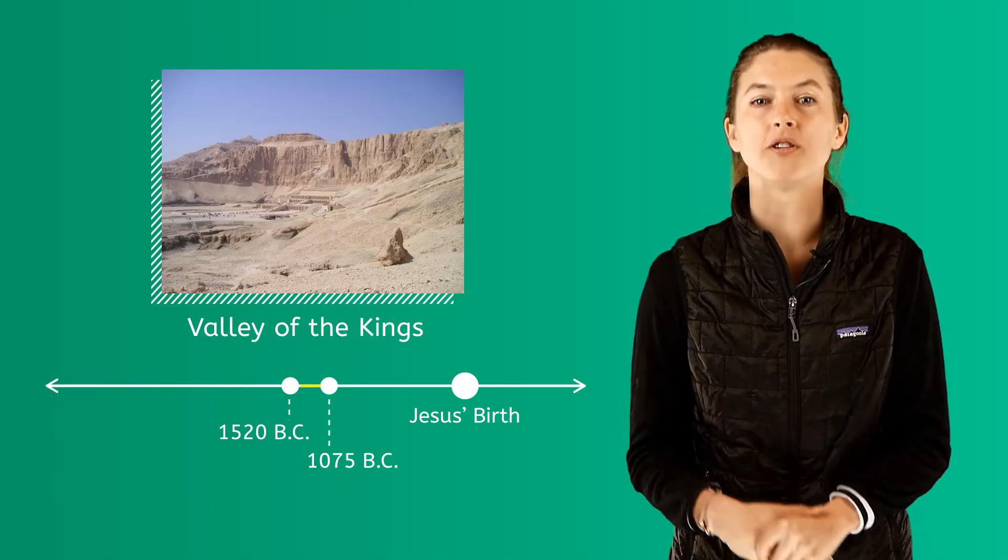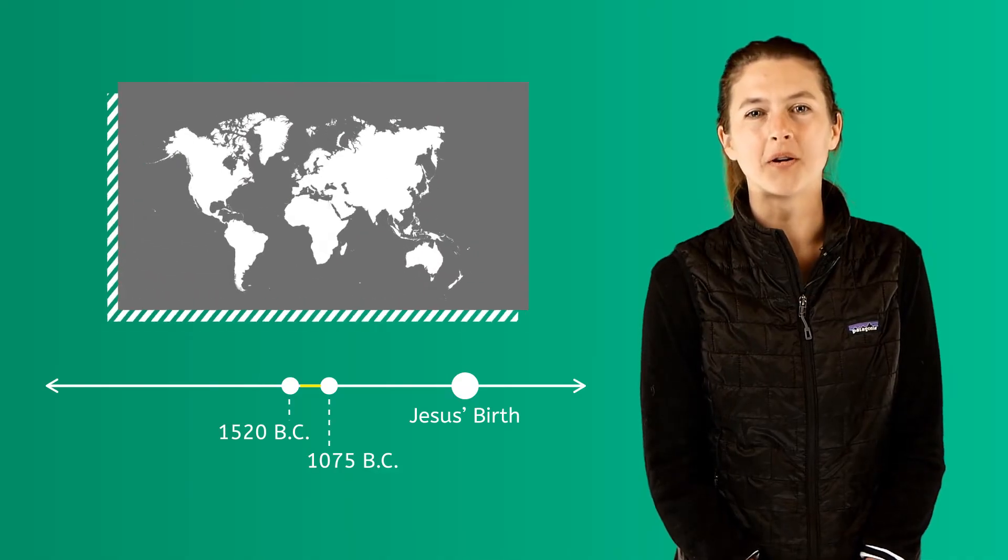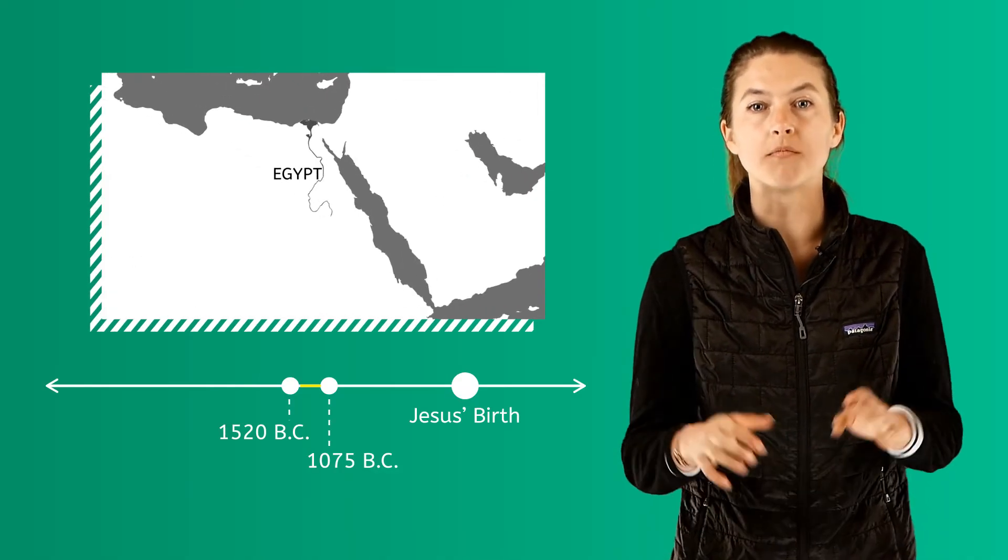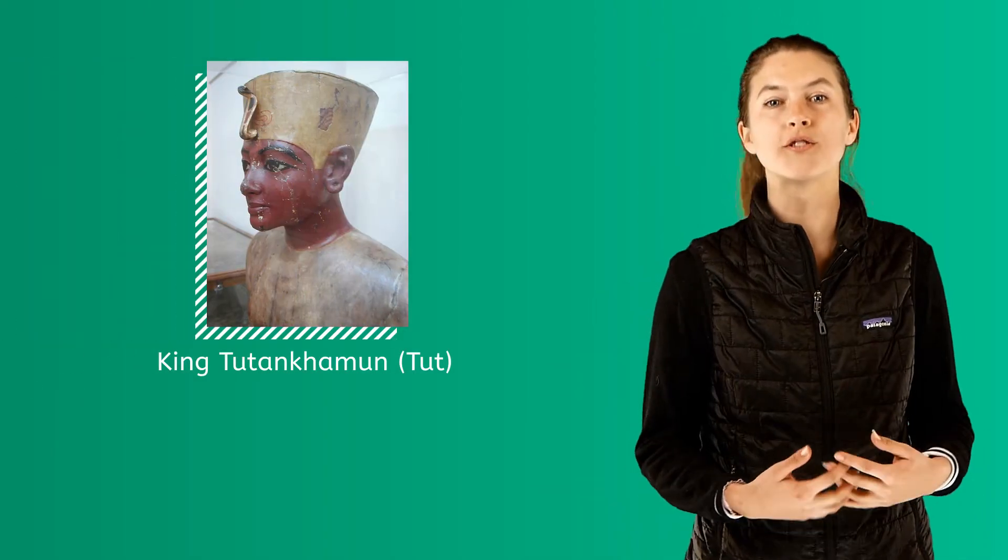This temple and the valley were used as burial sites for pharaohs and other important people. The capital city was moved from Thebes back to Memphis. King Tutankhamun, aka King Tut, also ruled during this period.